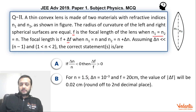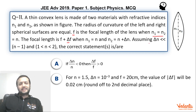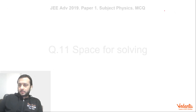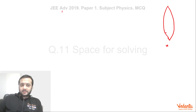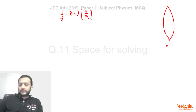Since n lies between 1 and 2, n minus 1 lies between 0 and 1, and Δn is much much less than n minus 1, meaning the change in refractive index for the second half is very very small. Now let's start solving. If the lens is made of uniform refractive index n, then 1/f = (n−1)(1/r + 1/r) = (n−1)(2/r), since r1 = r and r2 = −r, giving 2/r overall.